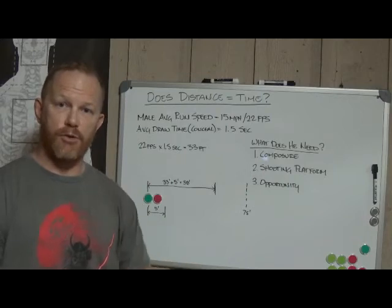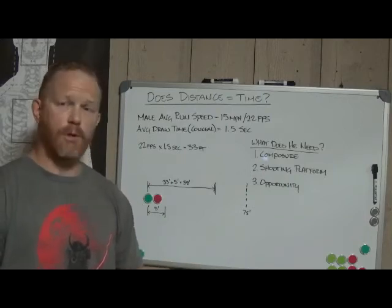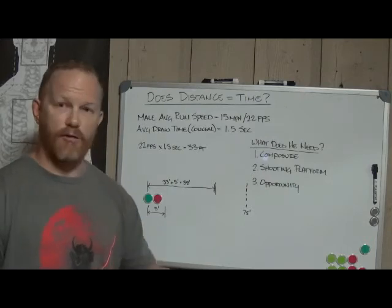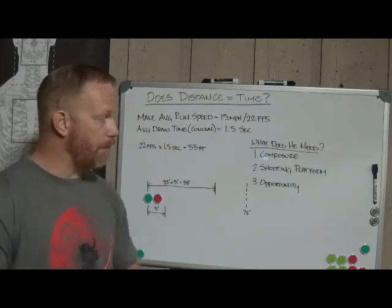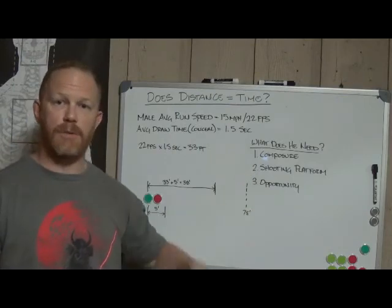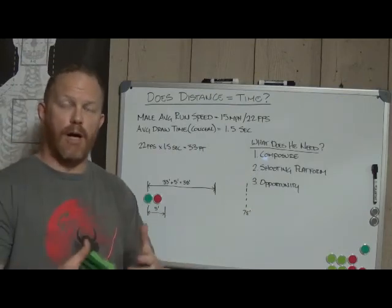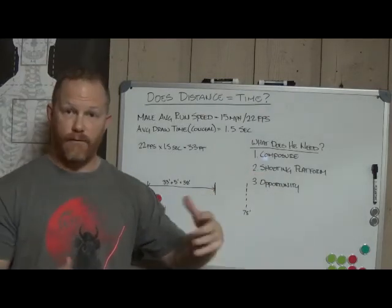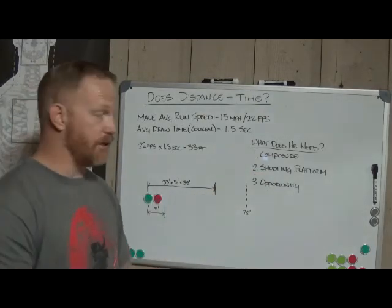Shooting platform—if I close that distance within a quarter second and I now begin to mess with his composure, can I also mess with his shooting platform? Absolutely I can. By making contact with this individual, I can knock him off balance, I can throw him to the ground, I can get control of that weapon. Regardless, he is not going to be able to establish a proper shooting platform if I'm within that body contact distance of him.